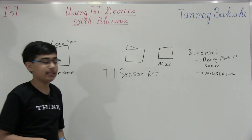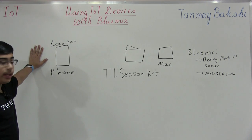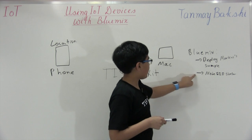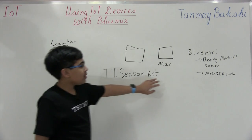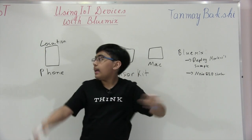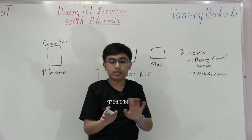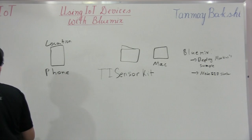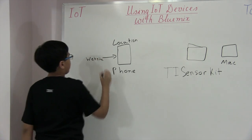Our goal is to take the phone's location sensor data and bring it over to Bluemix, specifically to debug it into Node-RED. Once we deploy Marcus's sample, it will be accessible from both Node-RED and the phone. Once we have the hostname in Bluemix, we're going to take that hostname and open that website on our phone.